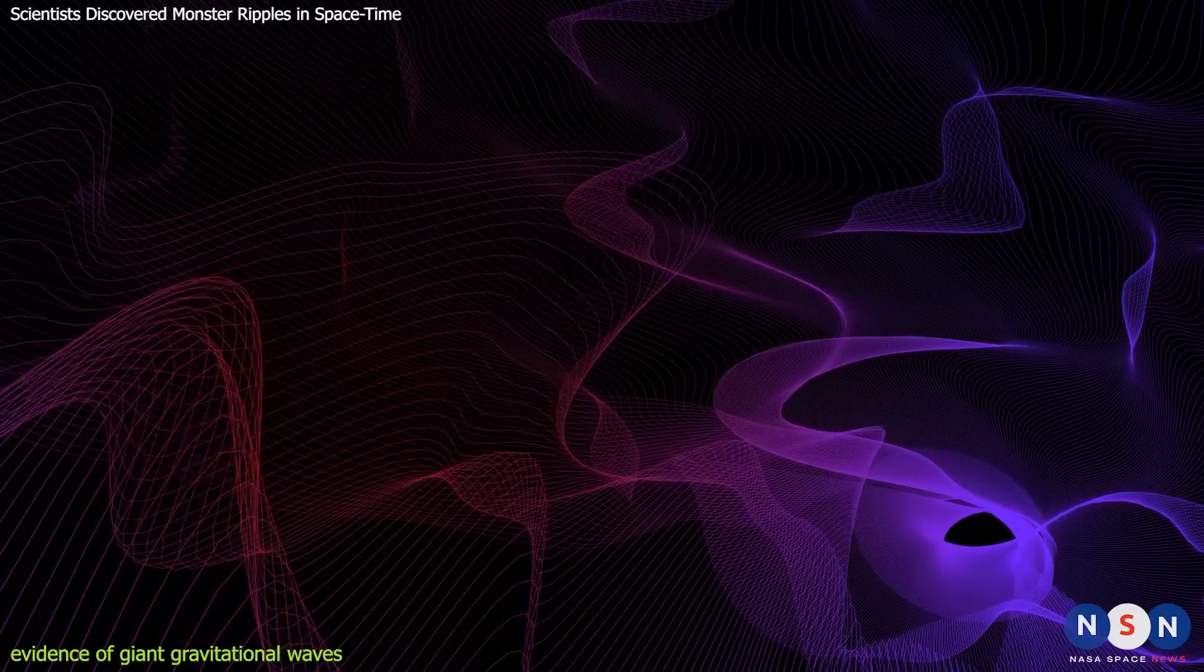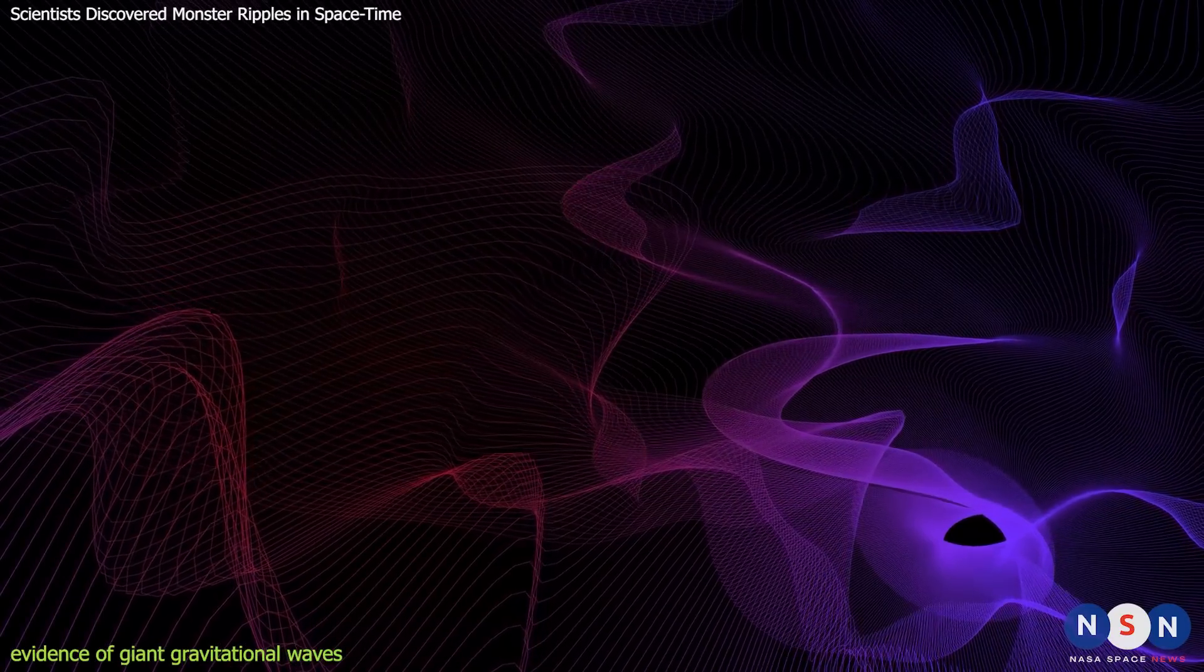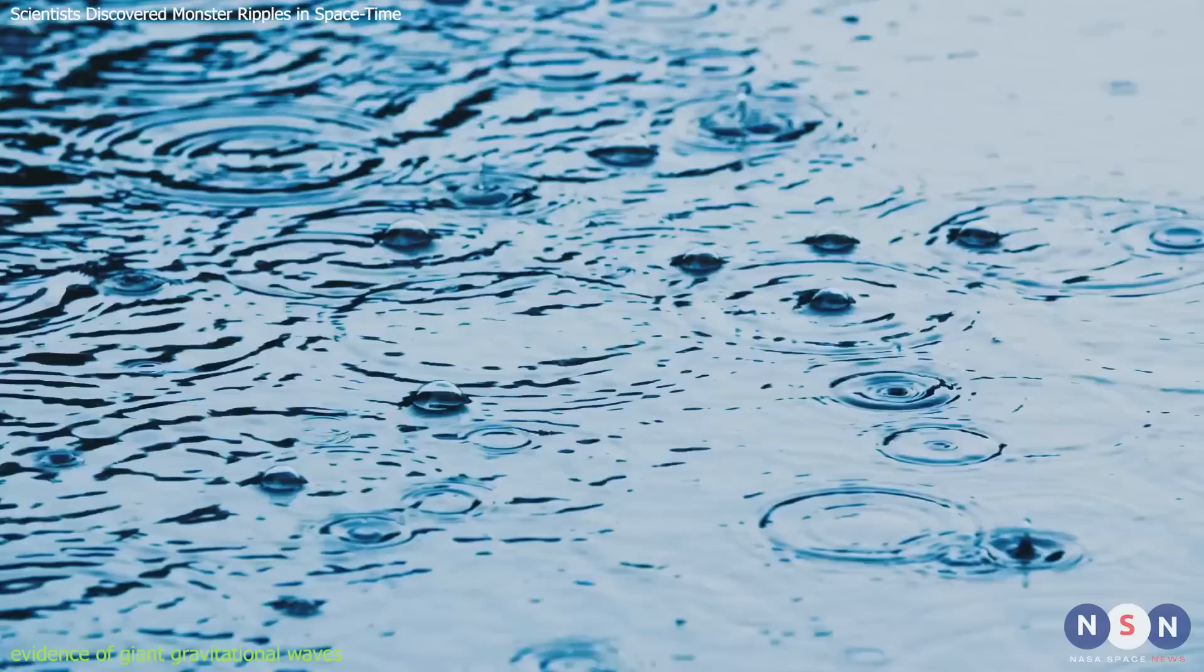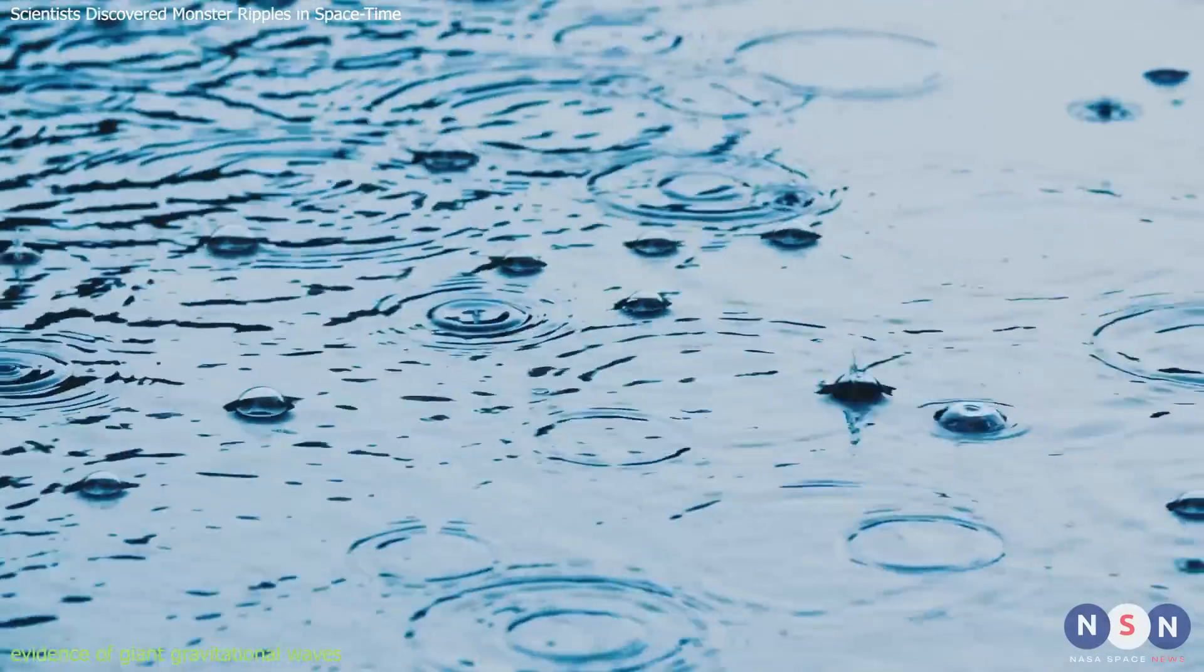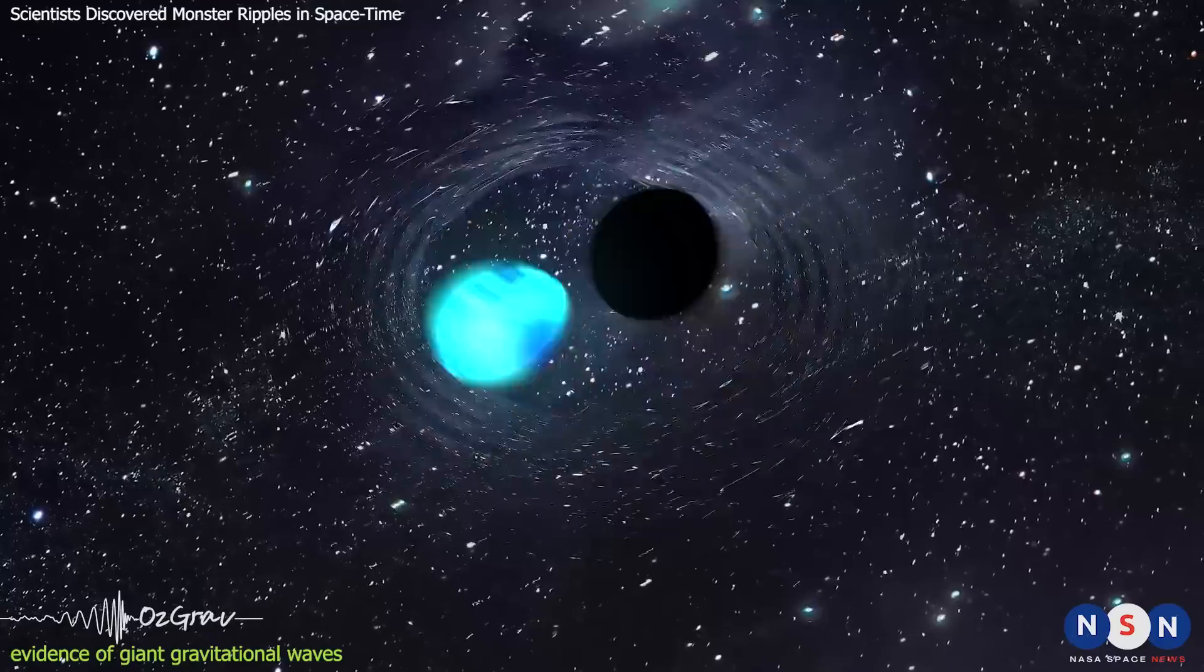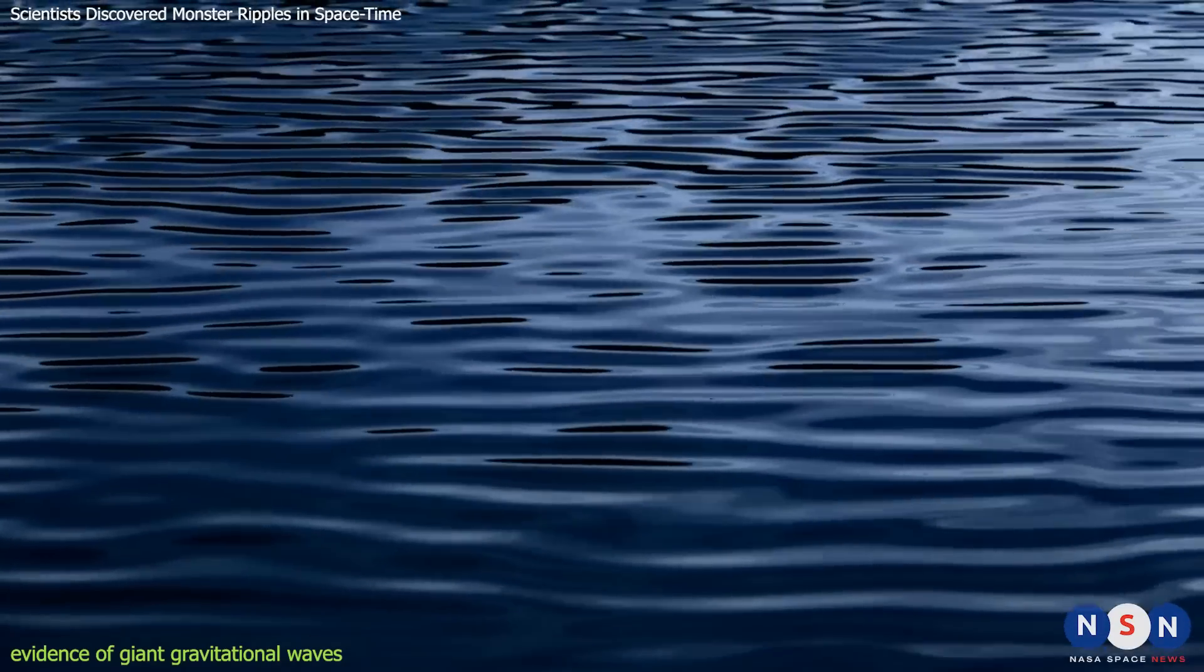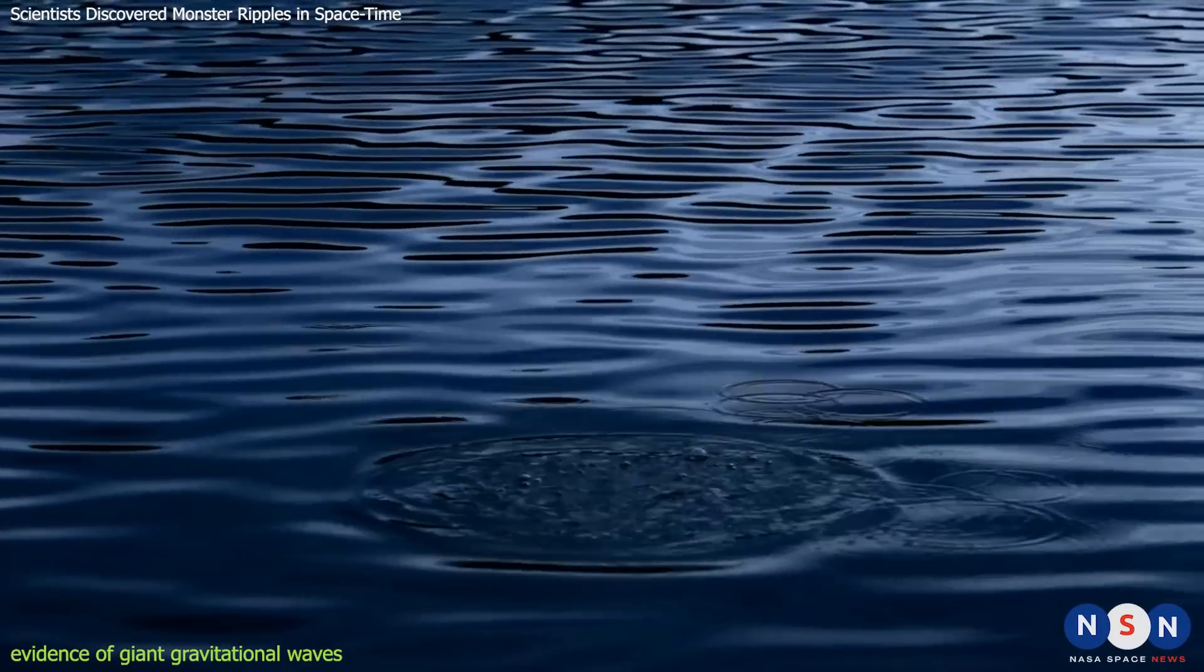They found evidence of a stochastic background of gravitational waves, which means a constant jostling in random directions. This is like the random sloshing of water on the surface of a pond caused by the rain. It is different from the regular waves that LIGO and Virgo see, which are like the ripples caused by a stone thrown into the water. What is the origin of this stochastic background?